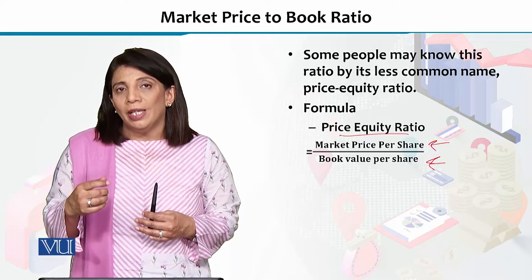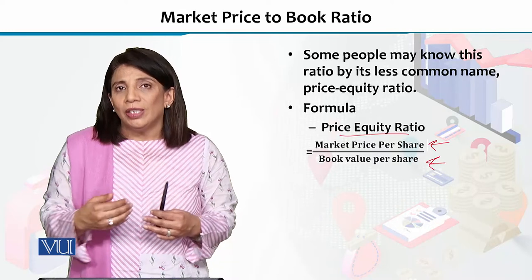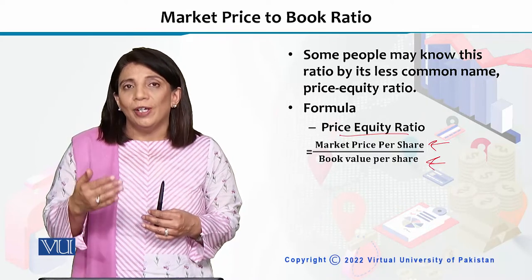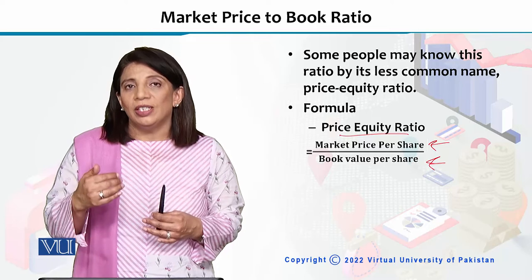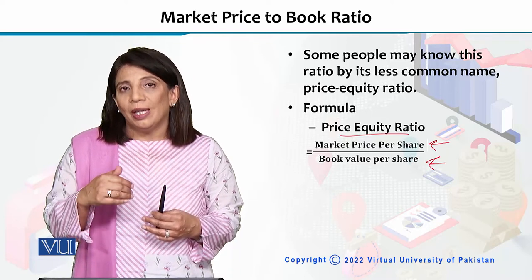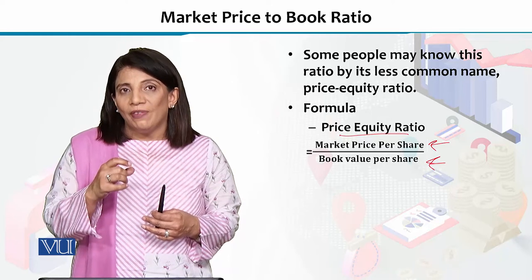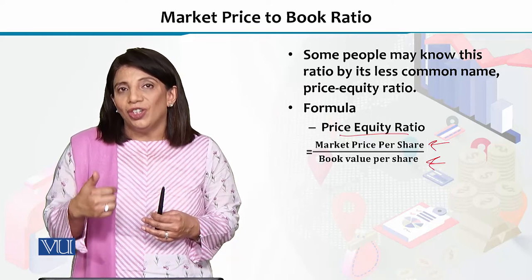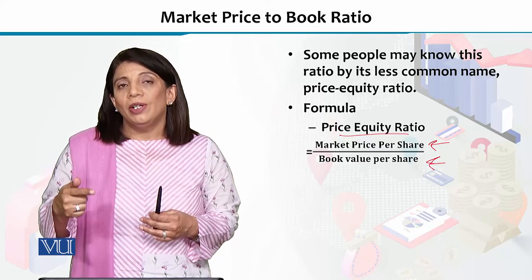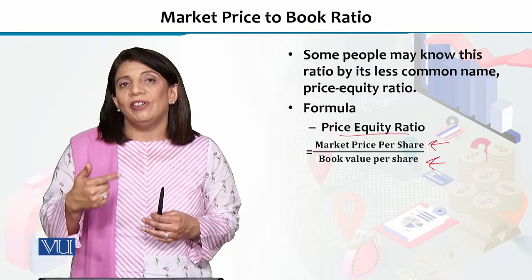A ratio less than one indicates that although the stock carries a higher book value, because of demand and supply interactions or investor preferences, the market price is lower. This means there may be a chance that the stock will pick up later in the market and the market price will increase.